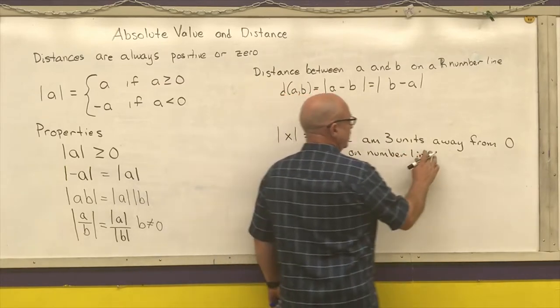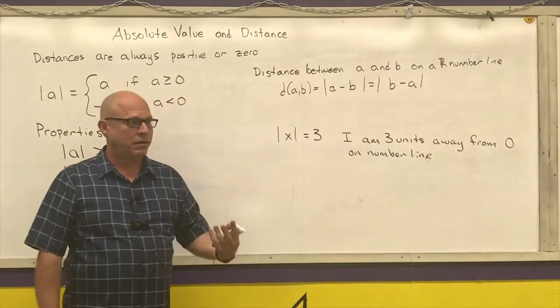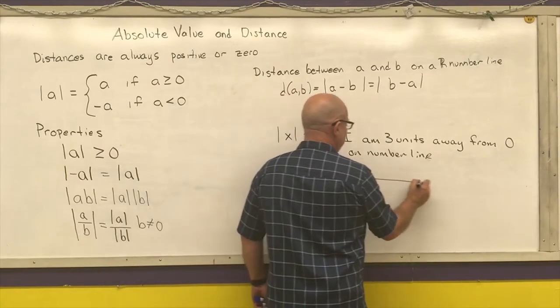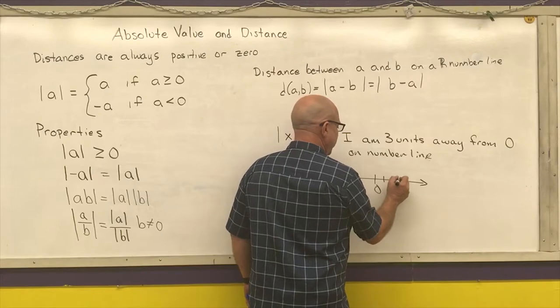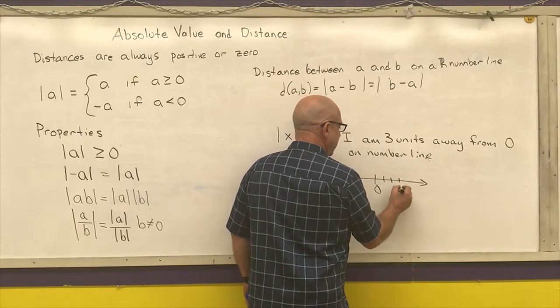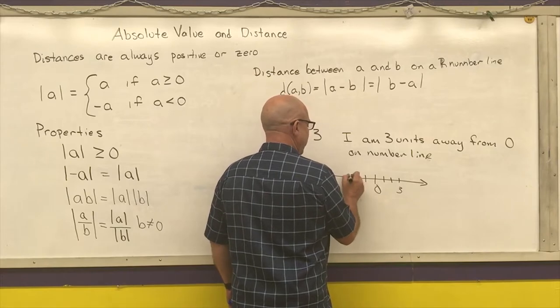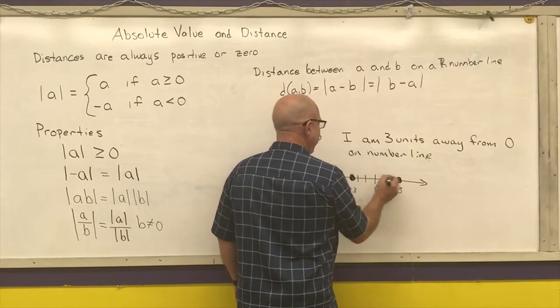A number whose absolute value is three is three units away on a number line from zero. So if I have my number line, one, two, three, one, two, three, I'm either that number or that number.